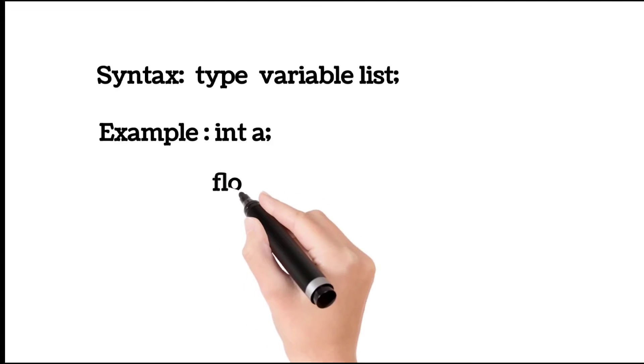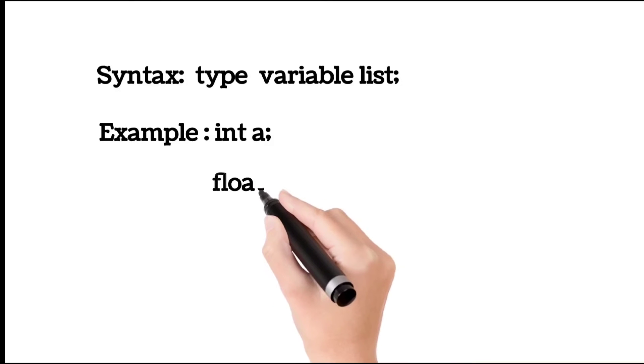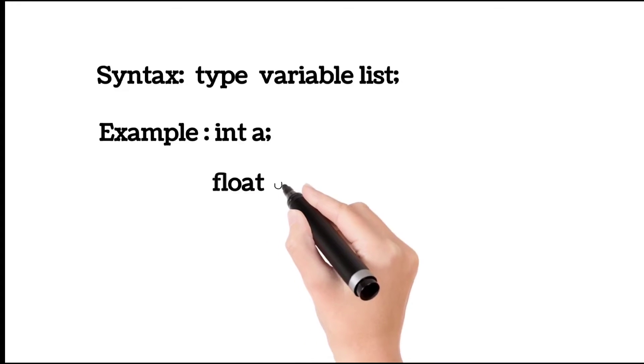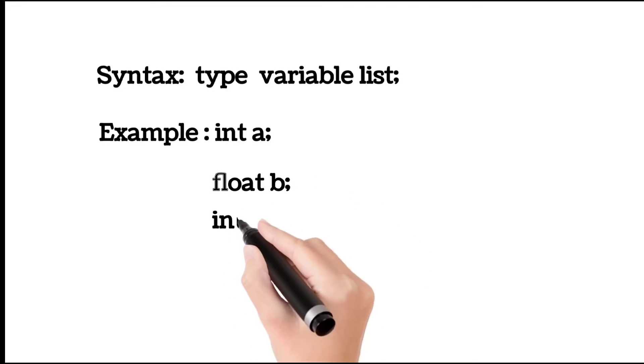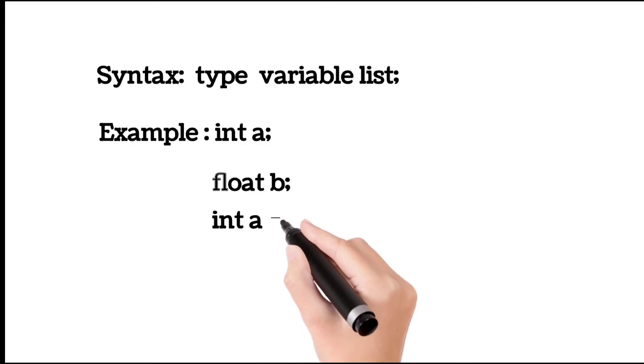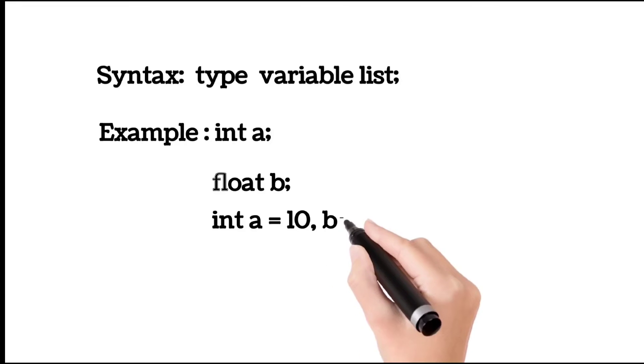Second, float b. B variable is float type, so b only stores fraction values. For example, 0.2, 0.3. Third, int a equals 10 comma b equals 20.